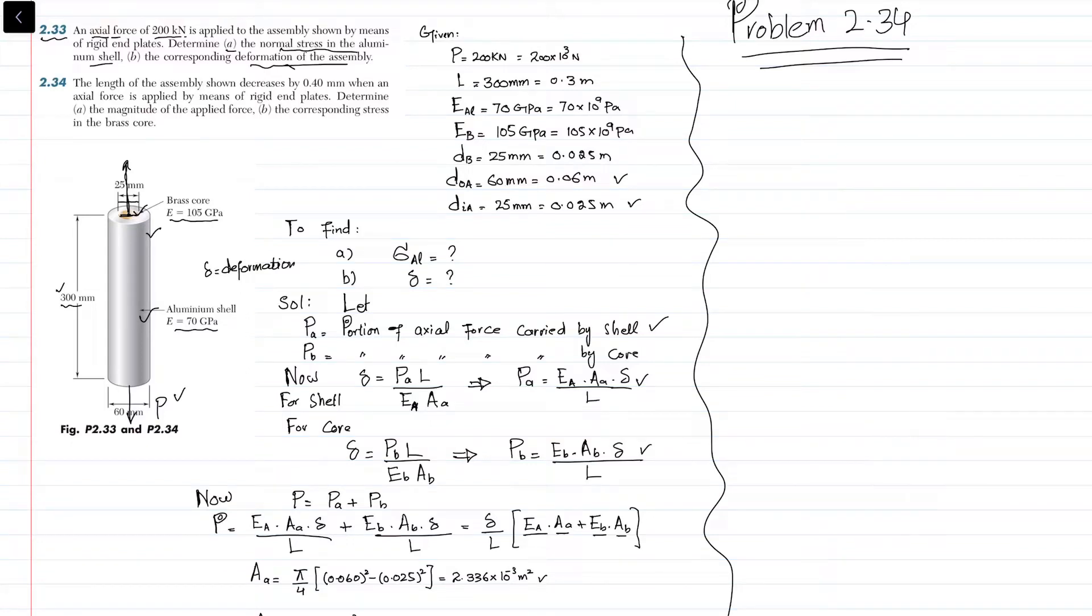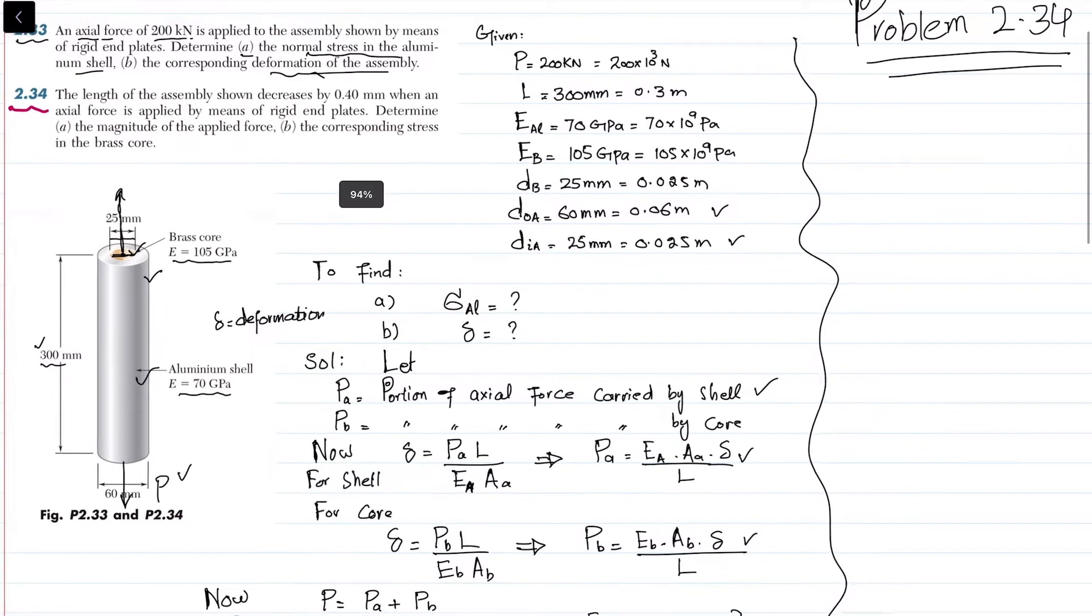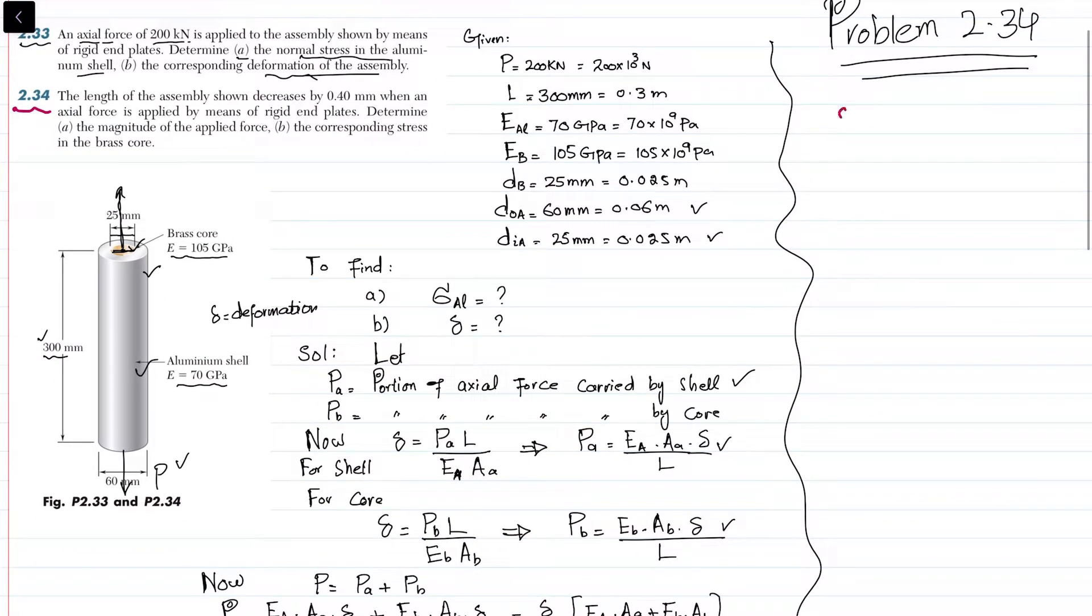Welcome back to problem 2.34. In this problem, the length of the assembly shown decreases by 0.40 millimeters when an axial force is applied by means of a rigid end plate. We need to determine the magnitude of the applied force.